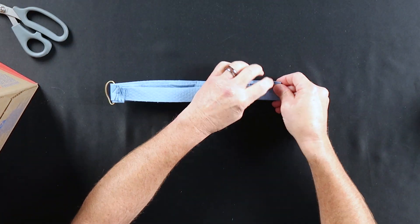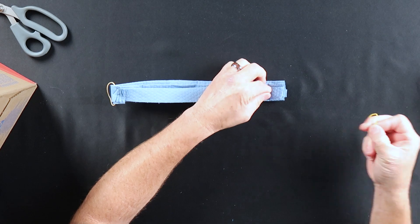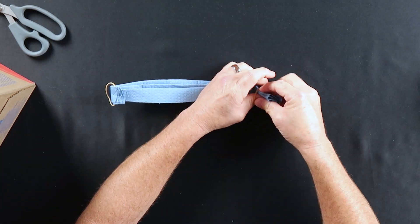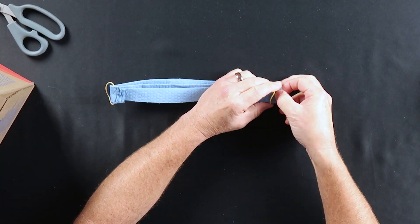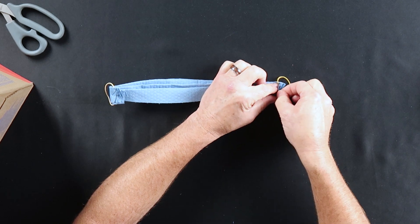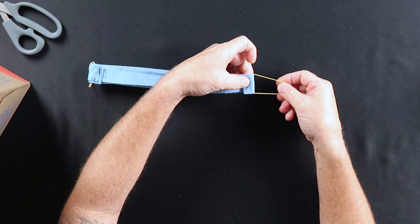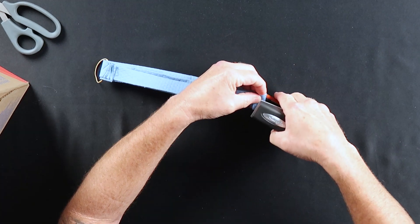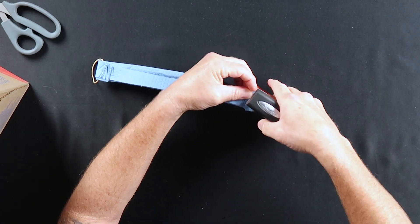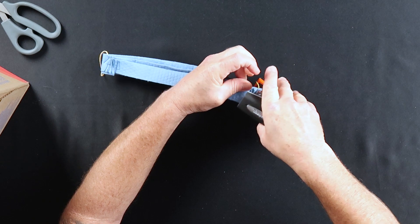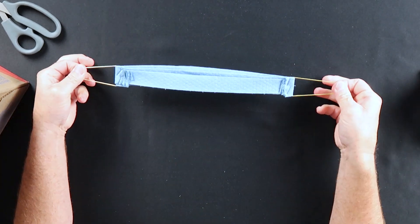You're going to flip it around. You're going to take your other rubber band, feed it through, press it over just like a half an inch or so. Like that. Get a stapler. Just like that.